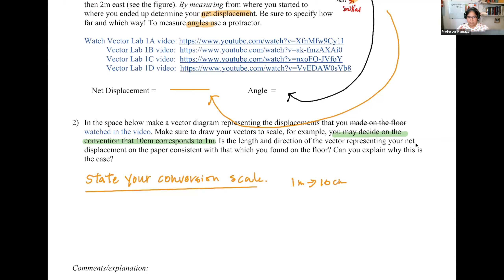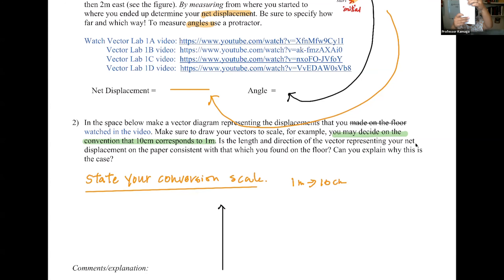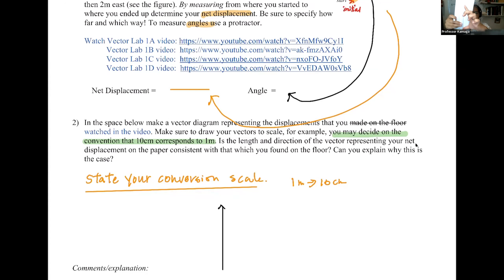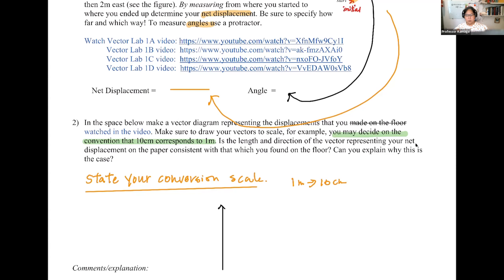Make sure you write down and state your conversion or scale. If it was one meter to 10 centimeters, state something like that. Then use your ruler on your paper. We walked 1.5 meters north, so draw from 0 to 15 centimeters — or if that's too much, 0 to 7.5 centimeters — then use your ruler to draw the triangle.